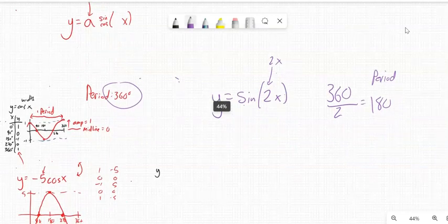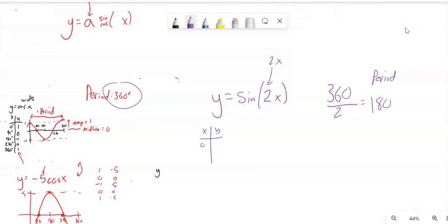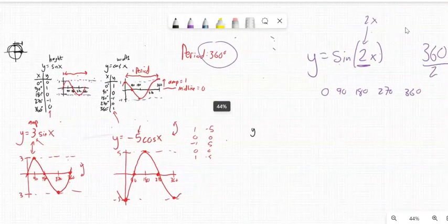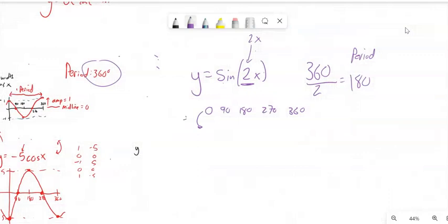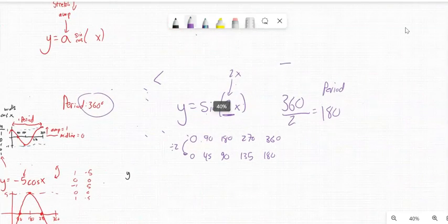Let me think about another way to do this. My parent function for sine is 0, 90, 180, 270, 360. This speeding it up makes everything happen twice as fast. So what I'm going to do then is divide all these by 2. So 0 divided by 2 is 0. 90 divided by 2 is 45. 180 divided by 2 is 90. 270 divided by 2 is 135. 360 divided by 2 is 180. So now what's happened is it's compressed in this direction.